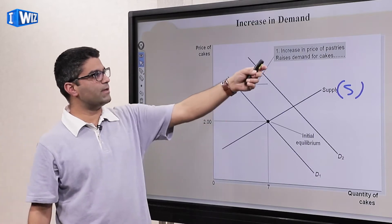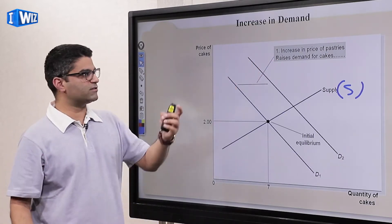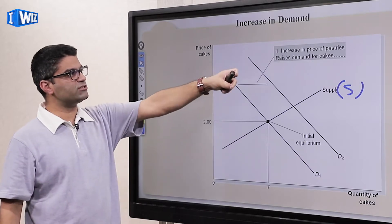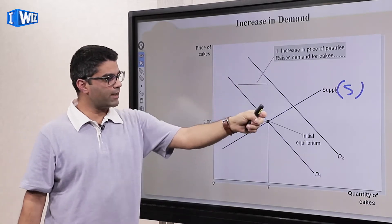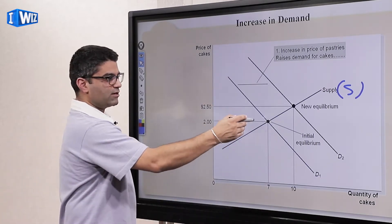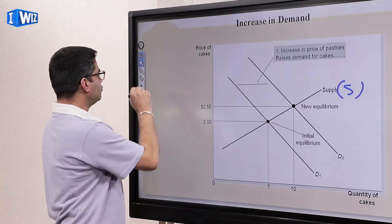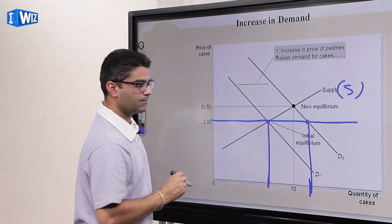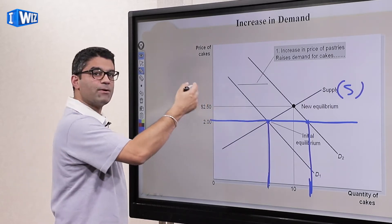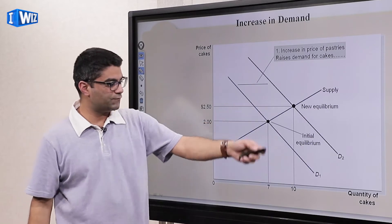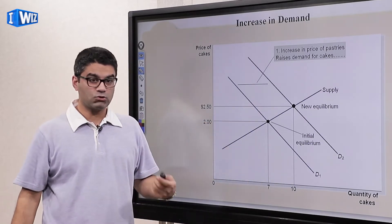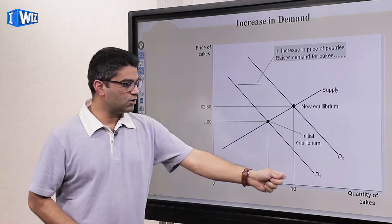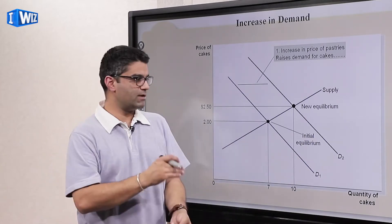The reason for the increase in demand here is a rise in the price of pastries, which are substitutes for cakes. If the price of a substitute increases, the demand for our good goes up. So demand for cakes increases and the curve shifts out to D2. At the old price of two dollars, there are now more buyers than supply, creating a shortage. Because of the shortage, the price rises — the new equilibrium becomes $2.50 and the quantity rises to 10 cakes.